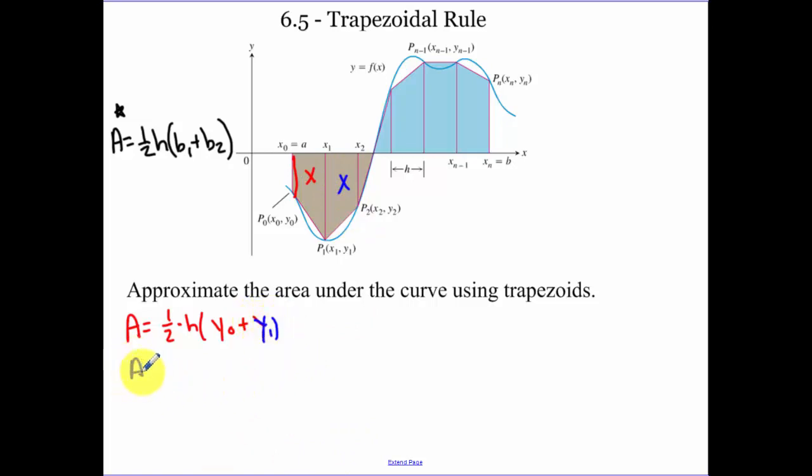The next one is 1/2 our height, and we're going to assume for now they all have equal heights. Y1 plus y2. Notice how we're using, we're duplicating one of our bases. Now this one, area is 1/2 our height, y2 plus y3.